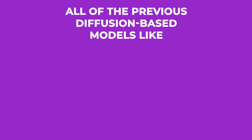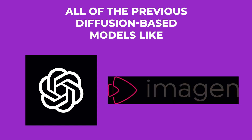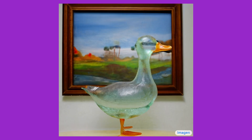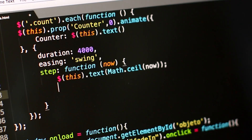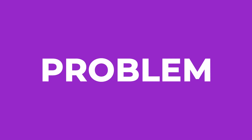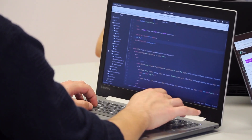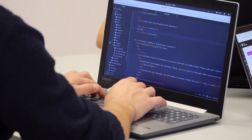All of the previous diffusion-based models like Dole and Imogen have become so good at image generation that I honestly cannot believe they're just some code at times. But there was always a tiny little problem — we never got to see what goes on behind the scenes, i.e., the code behind it. That's where Stable Diffusion wins the race.